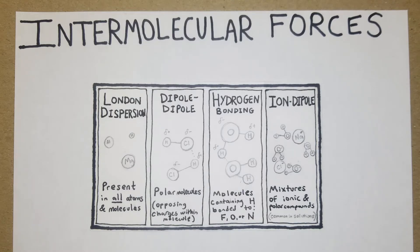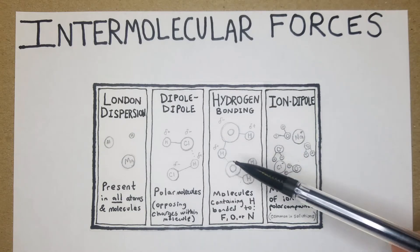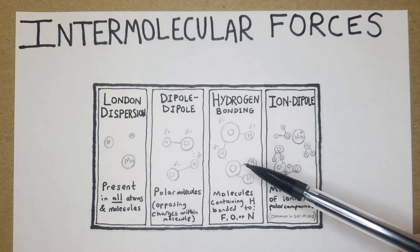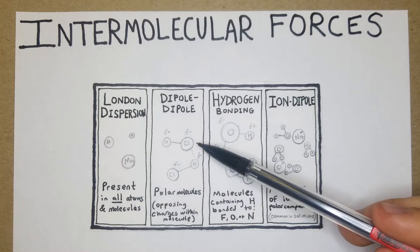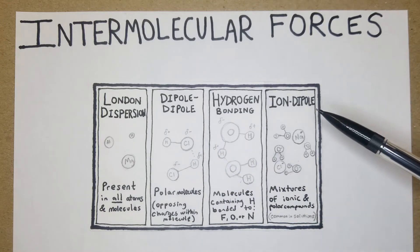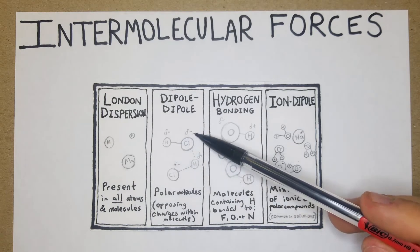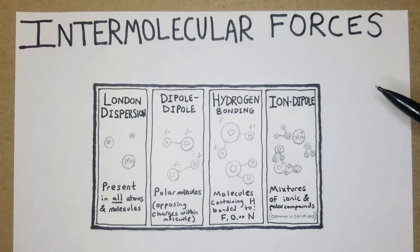Larger compounds are going to have more London dispersion force than a smaller molecule, for example, but in general everything has them. Then for dipole-dipole, it's essentially just opposing charges within the molecule. HCl is a really common example there - one side, the hydrogen, is slightly more positive and the other, the Cl, is slightly more negative.